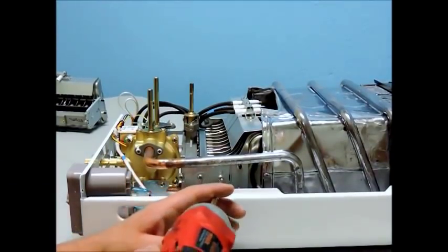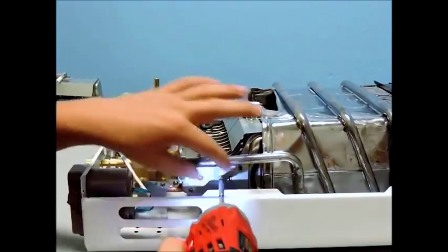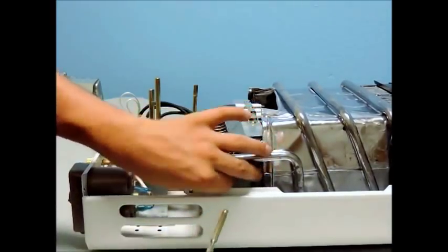Next, move on to the support brackets found on each side of the burner assembly and remove the screw that secures this bracket to the burner assembly.